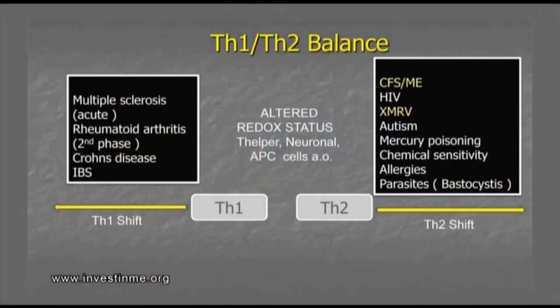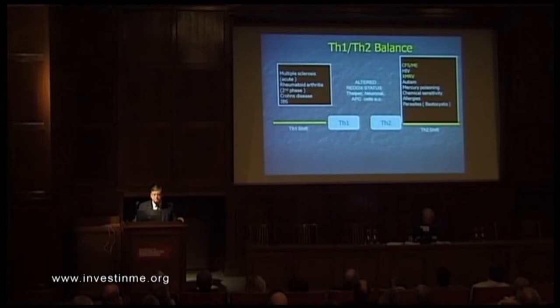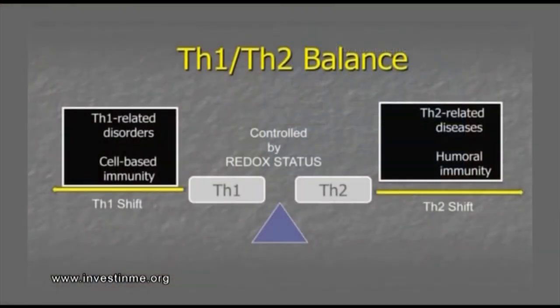When we look at different diseases, multiple sclerosis, rheumatoid arthritis, Crohn's disease, and some cases of IBS are extremely Th1-dominated. Other diseases — like CFS, HIV, eczema-related disease, autism, mercury poisoning, chemical sensitivity, allergies, and parasites such as Blastocystis — can induce a Th2 immunity. We know that these things are controlled by the redox status, so any drugs or other interventions that really control the redox status Th1/Th2 balance will in fact have an effect on this system.